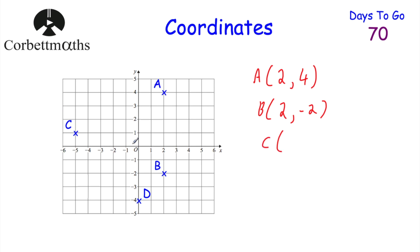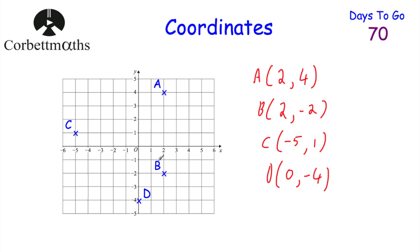In terms of the coordinates of point C, we're going to go to negative five and then up one, so it's negative five, one. And then finally, point D — we're not going left or right, we're just going straight down four. So it's zero, negative four. The coordinates of point A are two, four; point B is two, negative two; point C is negative five, one; and point D is zero, negative four. Well done if you got those.